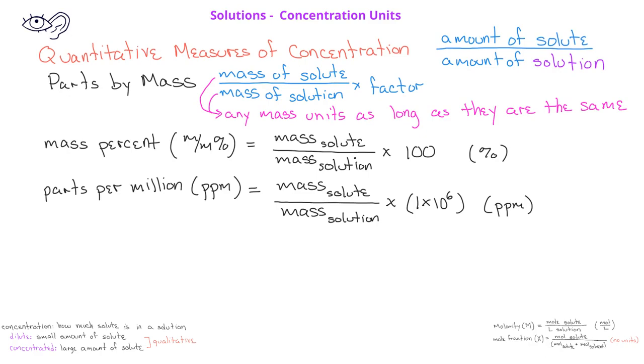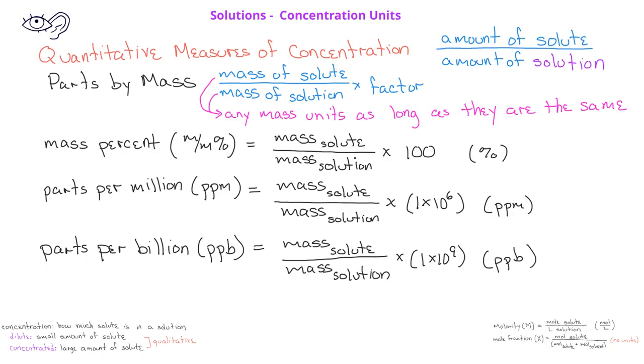Occasionally, we'll be working with much smaller concentrations. The final parts by mass measure is known as parts per billion. It's represented by ppb, and we calculate it by taking the mass of the solute divided by the mass of the solution, multiplied by one billion, or one times ten to the ninth.